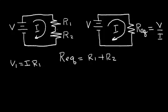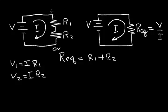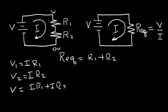Now I can calculate the voltage drop across R2, V2, which is equal to the same current I times R2. So the total voltage V is equal to the sum of V1 and V2, which is I·R1 plus I·R2.